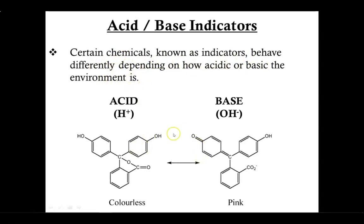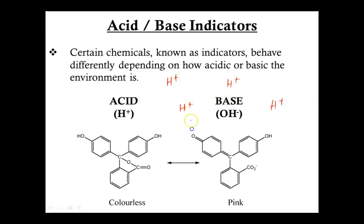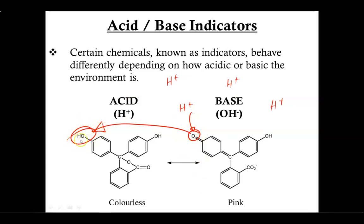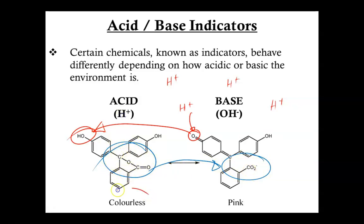This is the molecule of phenolphthalein. In an acidic environment, you'll have lots of H⁺ ions floating around in solution, and these H⁺ ions are attracted to the C=O group over here, turning it into a hydroxyl group instead. A small change to the molecular structure here results in a cascade of structural changes, turning it into this form. These changes cause light to refract differently, making this molecule colorless, while in its other form the molecule is pink.